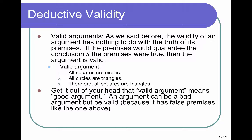Here's what I'm talking about: All squares are circles. All circles are triangles. Therefore, all squares are triangles. None of that is true, obviously. However, this is a valid argument because it is structured correctly, and if indeed the premises were true, then there would be no choice but to accept the conclusion as true.